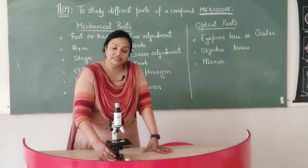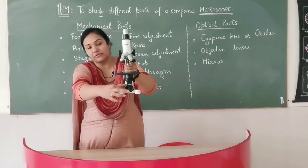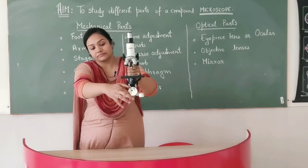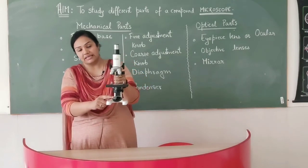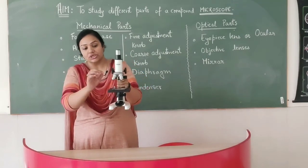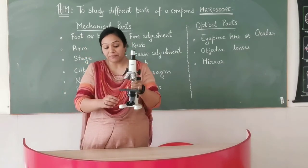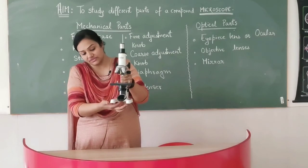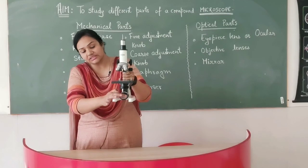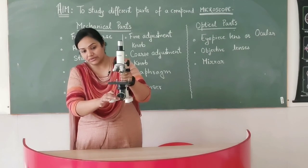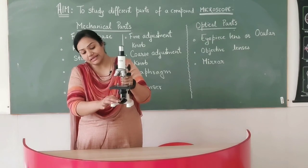The last but not the least is the mirror. If you see carefully, you can see we have a mirror here. The function of this mirror is to focus light on the stage so that we can easily clearly see the object on the stage. This mirror is having two surfaces. One surface is a plane mirror and the other surface is a concave mirror. So we have two types of mirrors on this surface, plane mirror and concave mirror.